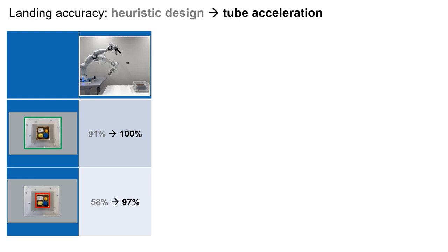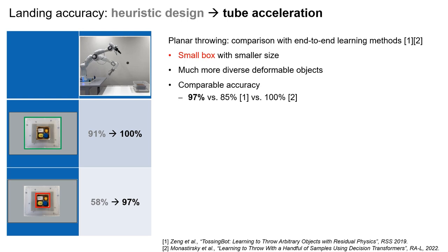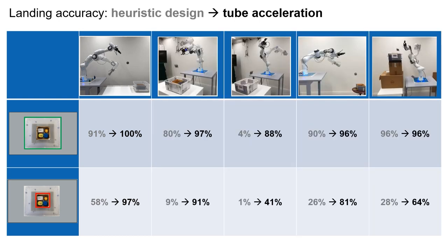With this experiment setup, we compare the landing accuracies of heuristic release motion with robust release motion driven by tube acceleration. In the case of standard throwing, tube acceleration achieves 97% accuracy into the small box. Compared with previous works on throwing diverse objects using end-to-end learning methods, our setup has a smaller target size and a much more diverse set of objects. Despite the more challenging setup, we achieved comparable accuracies. Furthermore, tube acceleration improves throwing accuracy for all four dexterous throwing configurations, and all release motions are dynamically feasible, obtained by simply solving a convex problem.